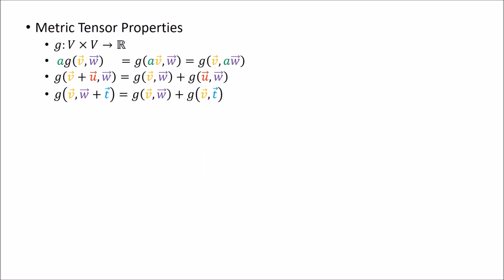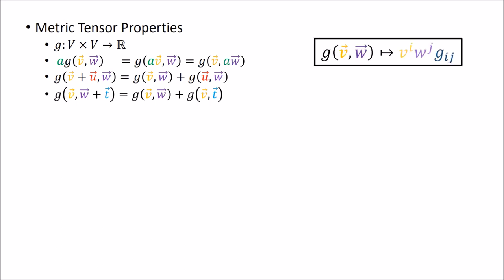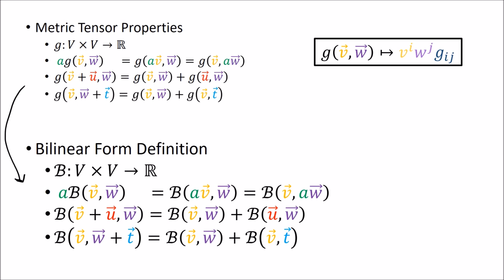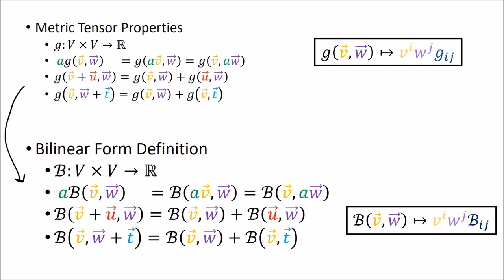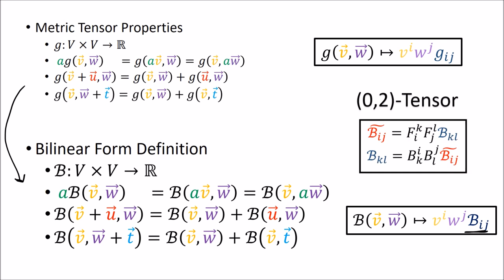So we have the properties of the metric tensor: it's a function that takes two input vectors from a vector space V and returns a scalar. The scaling rule tells us we can scale the output or scale either one of the inputs. The two addition rules tell us that when we have a vector sum in one input, we can distribute while holding the other input constant. In a given basis, we compute the output using this formula. Now it's time to define bilinear forms — and the definition is actually everything we just stated. A bilinear form is a function that takes two inputs from a vector space V, returns a scalar, and follows these adding and scaling rules. Like the metric tensor, we compute its output using a formula with components B_ij of a matrix, and bilinear forms are 0,2 tensors that transform using two covariant rules when we change coordinate systems.